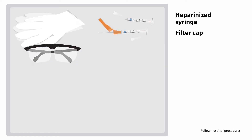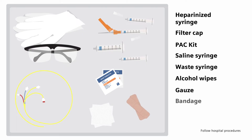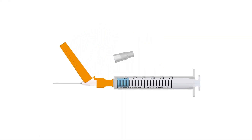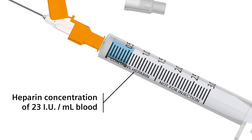Ensure you have all the materials you need to draw the patient's sample. Depending on the type of venous sample drawn, materials may include a heparinized syringe with a filter cap, a central line kit or pulmonary artery catheter kit, a saline flush syringe, an empty waste syringe to clear the CVC line, alcohol or decontaminant wipe, and dressing, just to name a few of the items. The syringe used for blood gas analysis should include dry, electrolyte-balanced lithium heparin as the preferred anticoagulant in a concentration of approximately 23 international units per milliliter of blood.